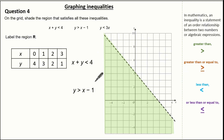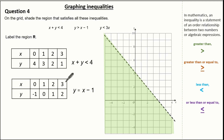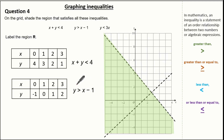Now let's have a look at y is greater than x minus 1. Drawing a table for y equals x minus 1: when x is 0, y is minus 1; when x is 1, y is 0; when x is 2, y is 1; when x is 3, y is 2. Plotting this with a dotted line because the inequality is greater than — and because y is greater than x minus 1, that means it's got to be above the line.